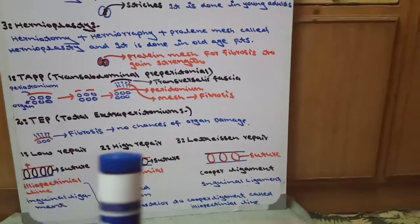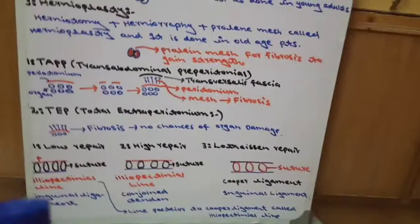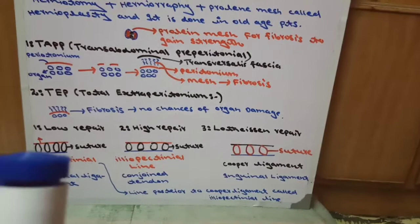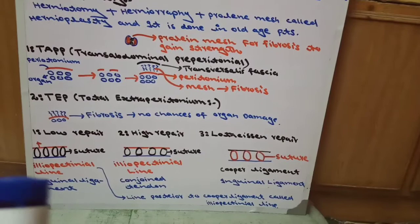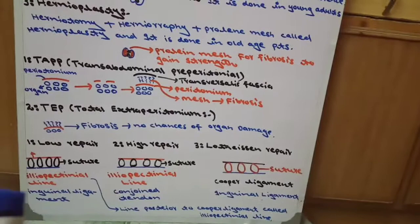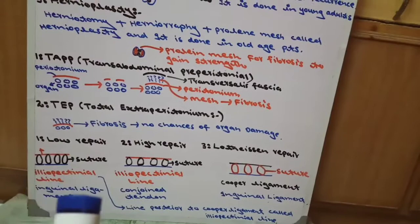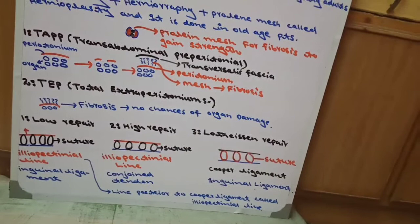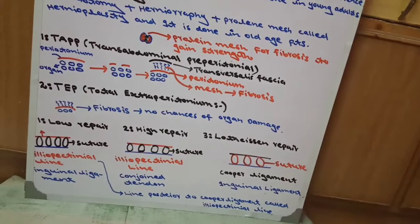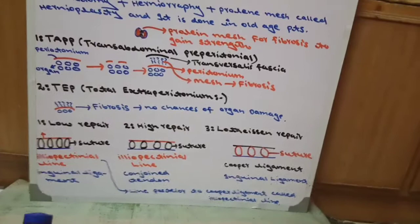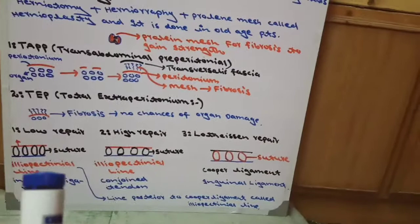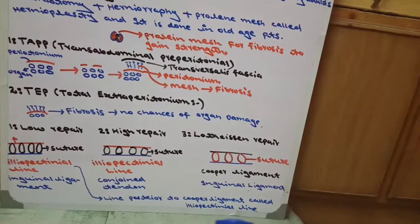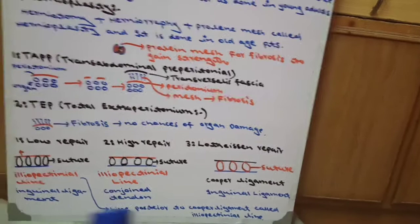The red line is the ileopectineal line. Low repair - in low repair we approach from the lower side, from the patient's testis region going toward abdomen. We do suturing there which we call low repair. The ileopectineal line is posterior to the inguinal ligament. The red is the ileopectineal line and blue is the inguinal ligament. We suture the ileopectineal line and inguinal ligament together in low repair, approaching from testis toward abdomen.